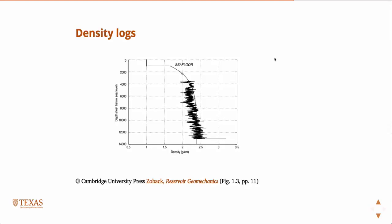So a more accurate way, if we actually have density logs, and a more accurate way than using those rules of thumb is to just integrate the density logs. So this is a pretty common plot that you'll see where the density is constant down to the seafloor, because the density of water is constant.